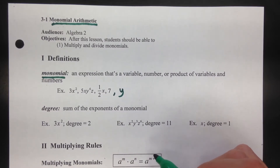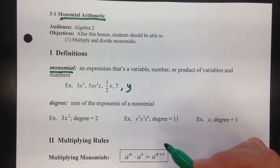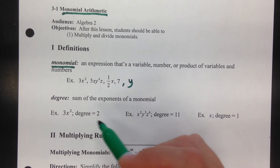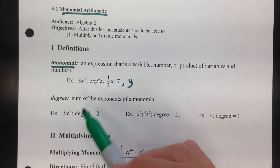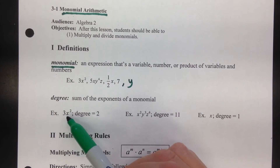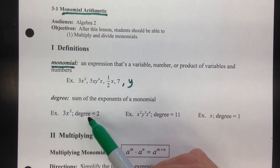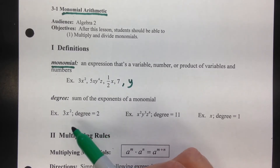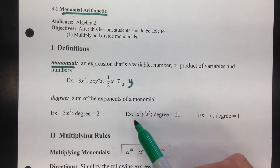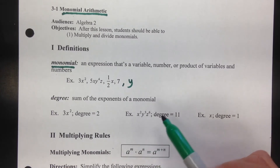The degree is the sum of the exponents of a monomial. For example, in 3x squared, the degree is 2. This is a concept that will be important when we get into polynomial functions, so we'll talk about it here but won't do much with it until we get to polynomials.